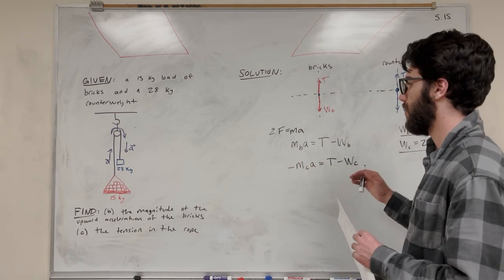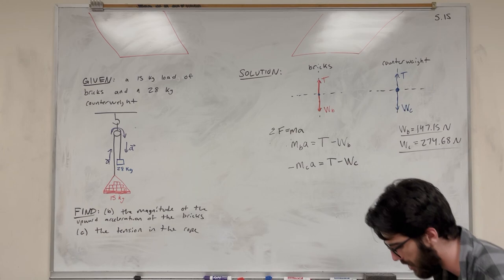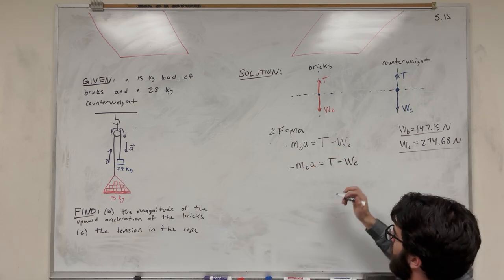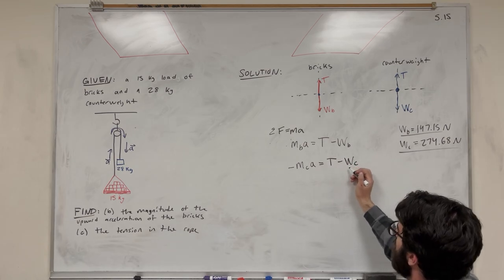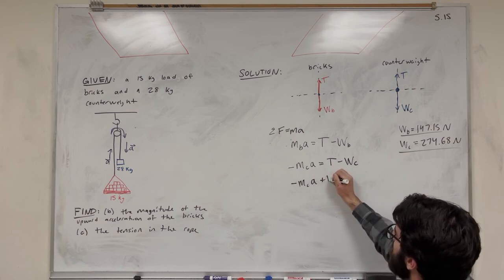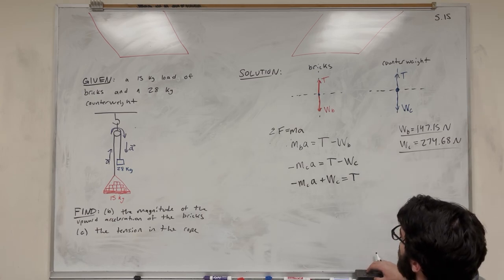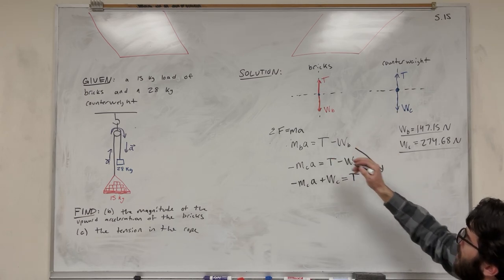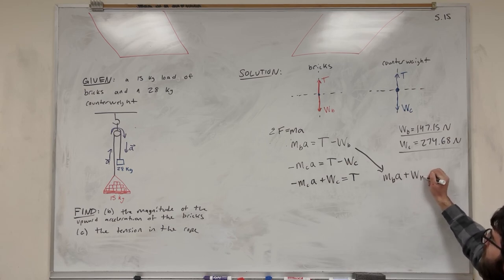Now we have two unknowns — acceleration and tension — and two equations, so we can solve. Let's eliminate tension. From the counterweight equation, rearranging gives: negative mass of counterbalance times acceleration plus weight of counterbalance equals tension. From the bricks equation: mass of bricks times acceleration plus weight of bricks equals tension.